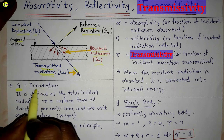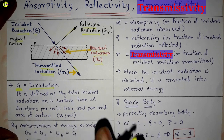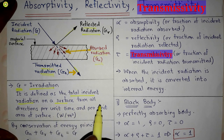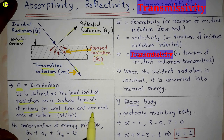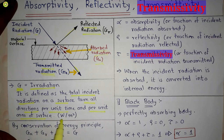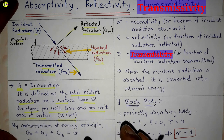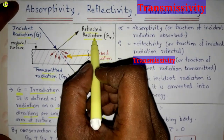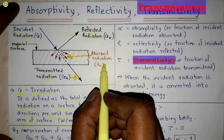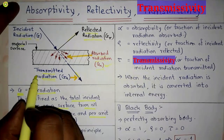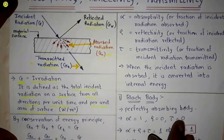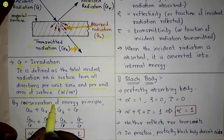G, that is irradiation, is defined as the total incident radiation on a surface from all directions per unit time and per unit area of surface, and its unit is watt per meter square. The reflected radiation is related to reflectivity, the absorbed radiation is related to absorptivity, and the transmitted radiation is related to transmittivity.